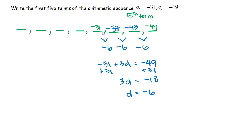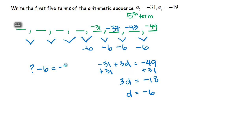We found two extra terms they didn't even ask for, but now that we've established the pattern, we can go backwards. The common difference is still negative 6 all the way through. So: what number minus 6 gives you negative 31? We add 6, which gives us negative 25 as the 4th term. Check: negative 25 minus 6 is negative 31. Correct.